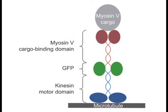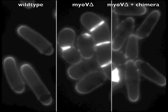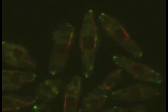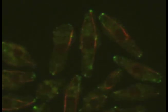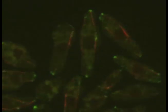Remarkably, the chimera is functional to restore polarized growth. In contrast to wild type cells, myosin-5 delta cells are really round and grow really poorly. Upon expression of the chimera, they regain elongated shape and grow as well as the wild type. Thus, fission yeast cells do not care what route their cargo takes — all that counts is the destination at cell poles. This study shows that the cytoskeleton is extremely plastic and that cells can adapt to an entirely new mode of transport.